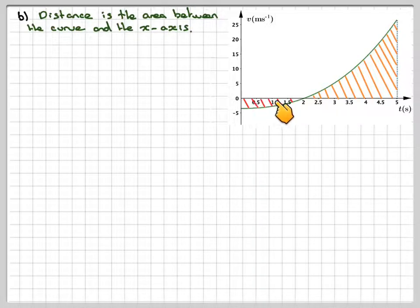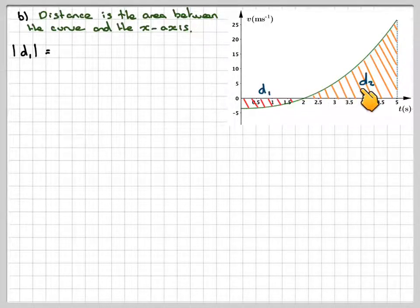So we'll have to integrate separately and add it to this one and ignore the minus sign and add it to this one. Now you cannot use your calculator function, integral function. You have to actually work out the integration. So I'm going to call that d1 and d2.